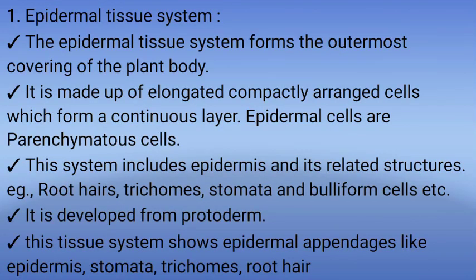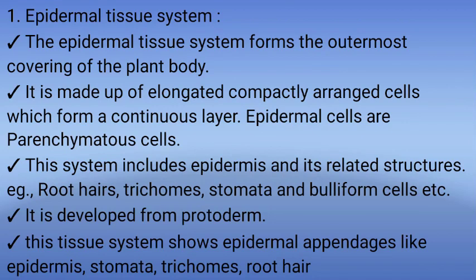The first one is the epidermal tissue system. The epidermal tissue system forms the outermost covering of the plant body. It is made up of elongated, compactly arranged cells which form a continuous layer. Epidermal cells are parenchyma cells. This epidermal tissue system includes epidermis and its related structures — for example, root hairs, trichomes, stomata, and bulliform cells. This epidermal tissue system developed from protoderm. Epidermis shows epidermal appendages like stomata, trichomes, and root hair.